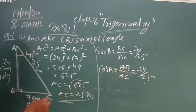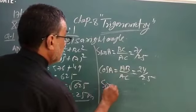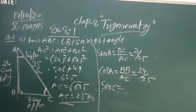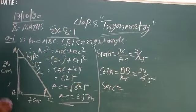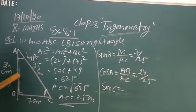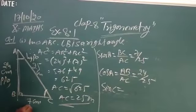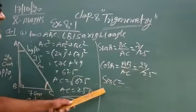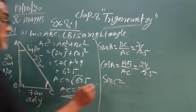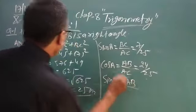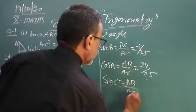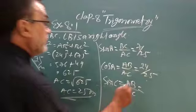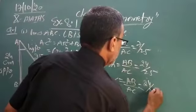Then find the value of sine C. Sine C. This angle. This angle means you can say that if angle C is there, then this side is considered as opposite and this is considered as adjacent. This is the fix. Sine C, opposite, means AB upon hypo AC. So what is the value of AB? 24. And this is 25. So 24 upon 25.